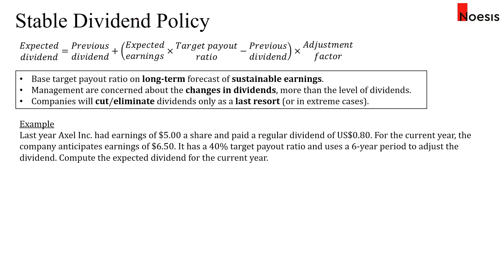In the stable dividend policy, management will incrementally increase the dividend over the years rather than trying to drastically increase or reduce dividends — hence the name stable. The expected dividend is based on the previous dividend plus the expected earnings times the target payout ratio, minus the previous dividend, adjusted by an adjustment factor of 1 over N, where N is the number of years to make the adjustment. The target payout ratio is based on the long-term forecast of sustainable earnings, and management will be concerned about changes in dividends rather than the level of dividends itself.